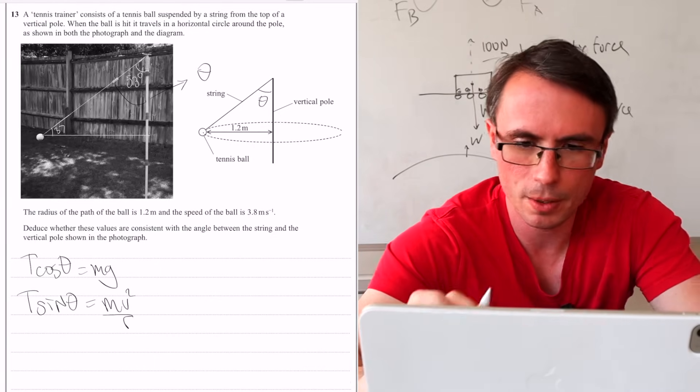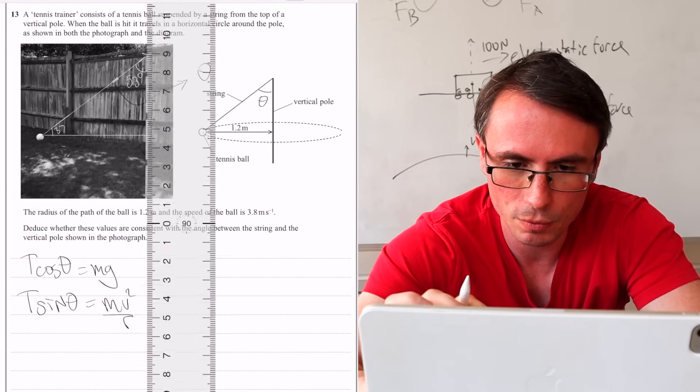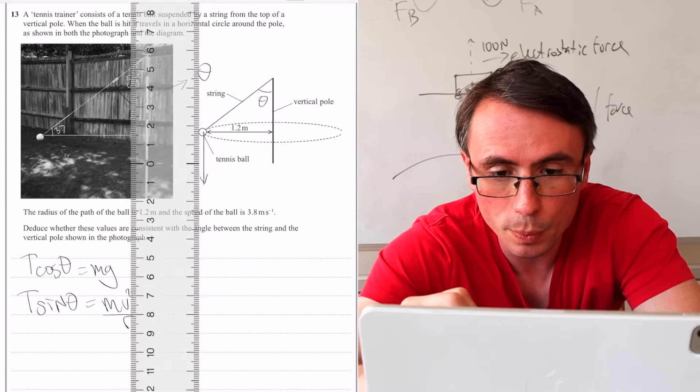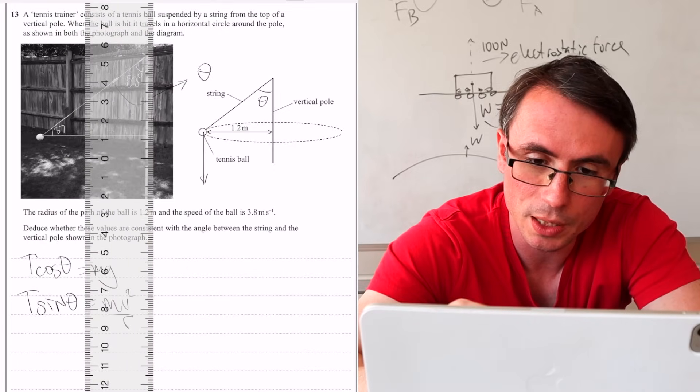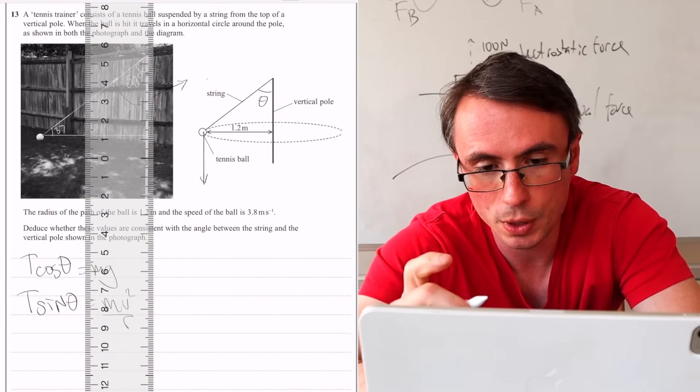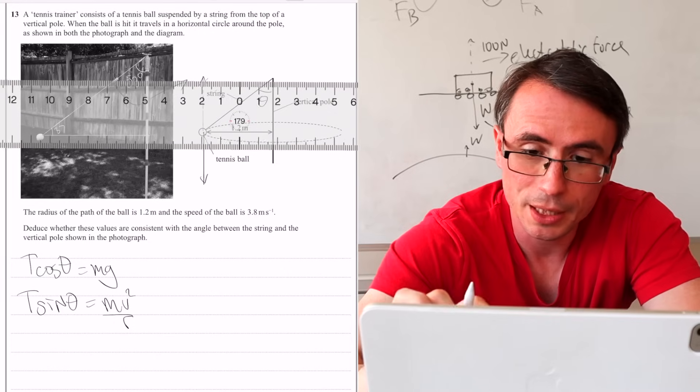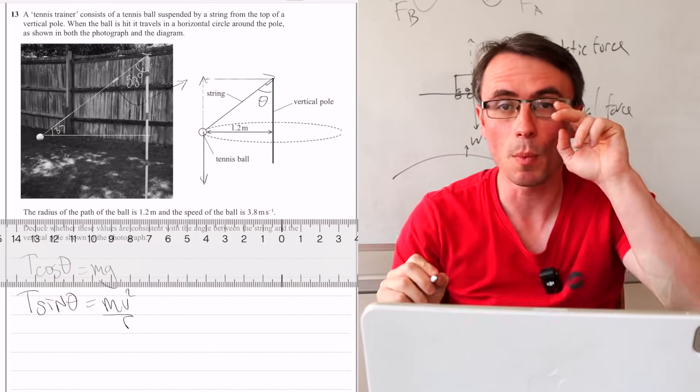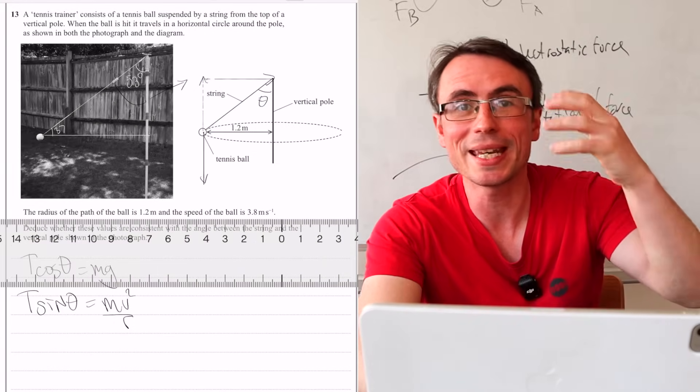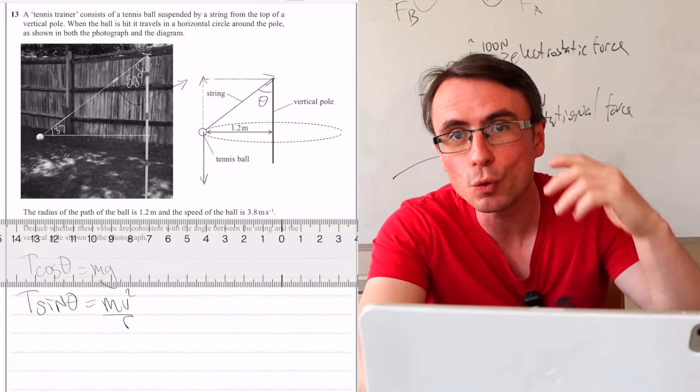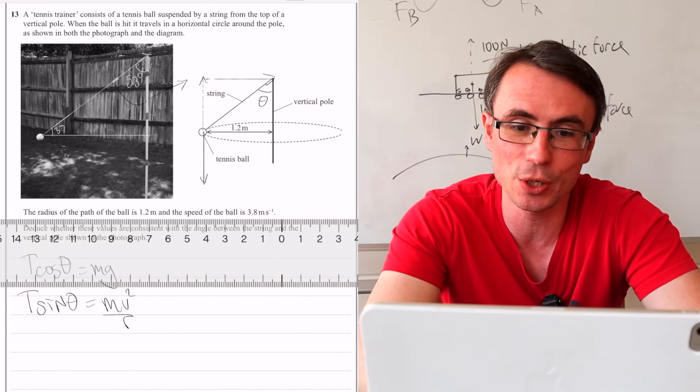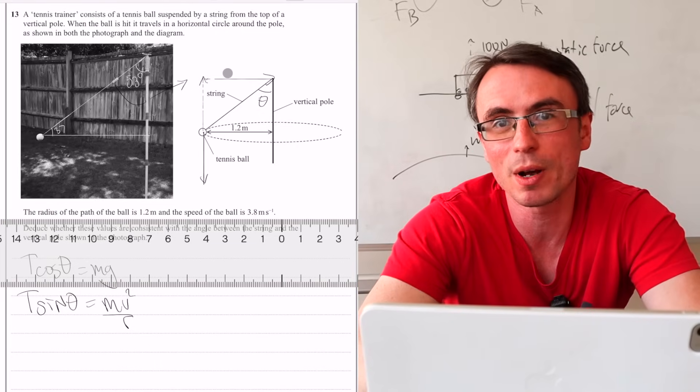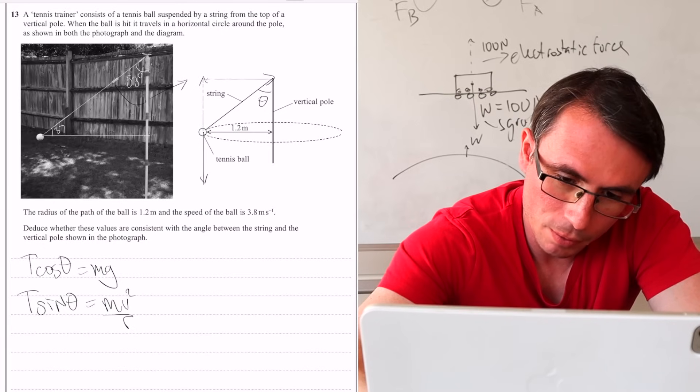Why is that? Well, the weight will be acting straight down like this. And this will be supported by the component of the tension, which is just acting upwards. Because the ball is moving in circular motion, there still needs to be a net force towards the center of rotation. And that is this vector over here, mv squared over r.